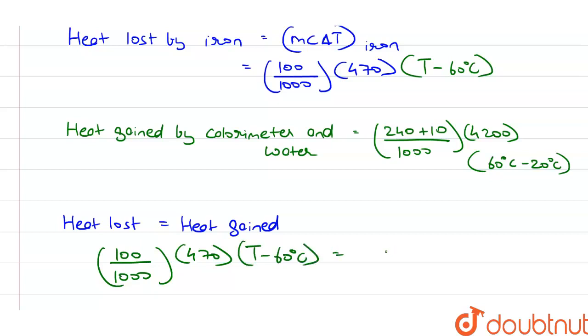And it is equal to 250 upon 1000 times 4200 into 60 minus 20 degrees Celsius is 40 degrees Celsius.